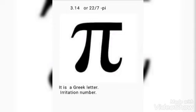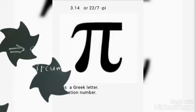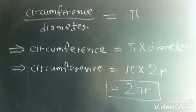So, we see that in all circles, circumference divided by diameter is equal to pi. This implies that circumference is equal to pi times diameter. This implies that circumference is equal to pi times 2r.